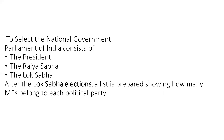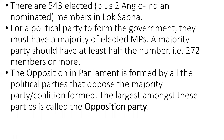After the Lok Sabha elections, a list is prepared showing how many MPs belong to each political party. Lok Sabha is the lower house of the government and Rajya Sabha is the upper one. In Lok Sabha, the people are directly elected, and in Rajya Sabha, they are indirectly elected. There are 543 elected members in Lok Sabha, and two Anglo-Indians are nominated. For a political party to form the government, they must have a majority of elected MPs. A majority party should have at least half the number, that is 272 members or more.